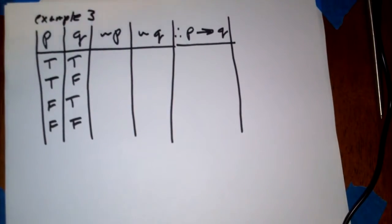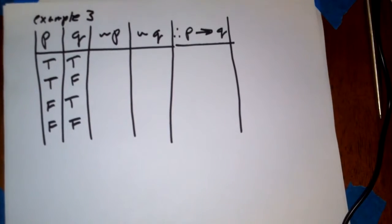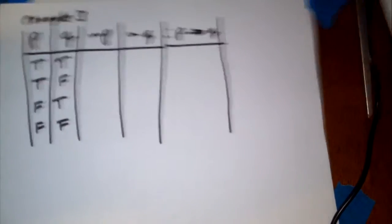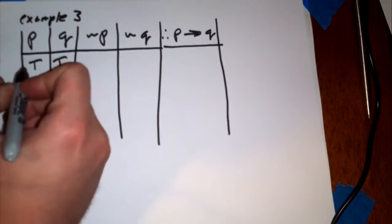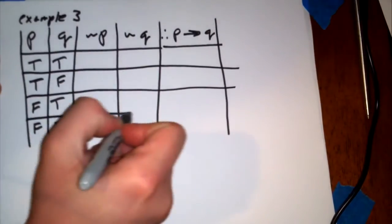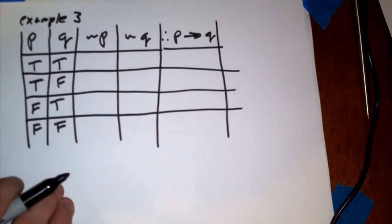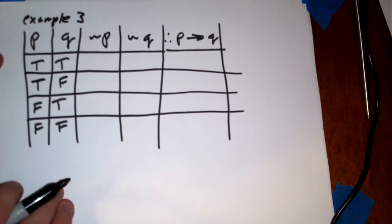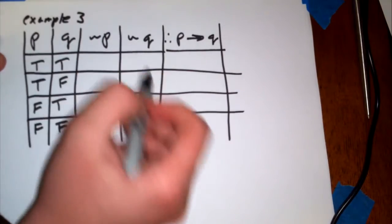If we're looking at this example here, again, I set up all the basic combinations of P and Q. Let me draw some lines so we don't get any confusion. Here's a basic truth table.